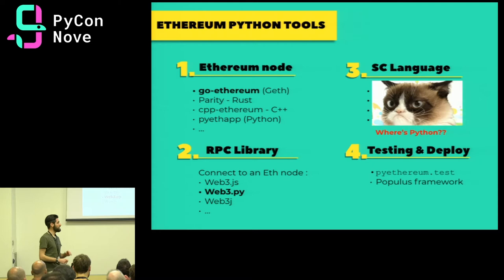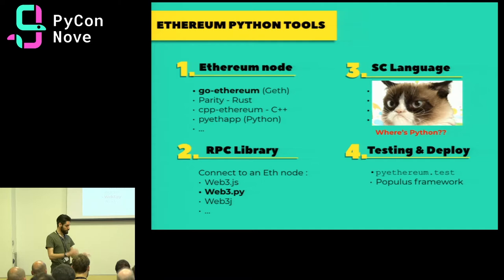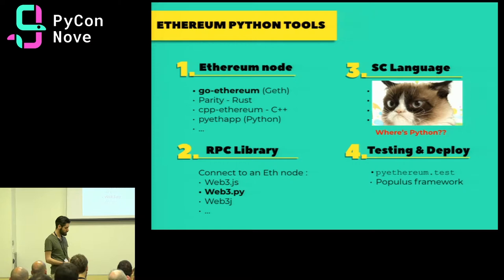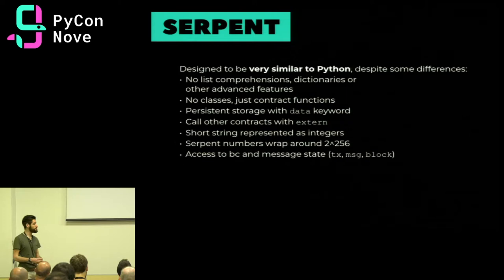You might notice there's no Python there. In Ethereum there will never be any Python smart contract compilable to EVM — that's because the EVM has specific memory management properties that just cannot be translated from a full-fledged language designed to run on common operating systems. But Serpent is a good alternative, because it was designed to be very similar to Python.